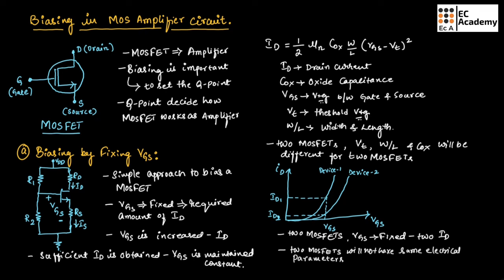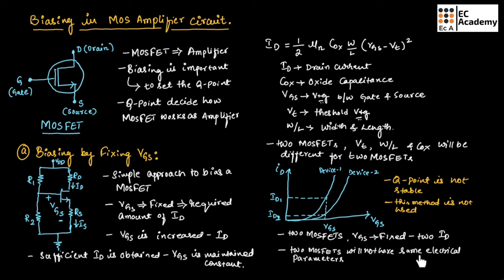In this type of biasing, the Q point is not stable and this method is not commonly used. For two MOSFETs, if VGS is fixed or common, we will get two different drain currents as seen in the graph. That is why we can say two MOSFETs will not have the same electrical parameters, and the Q point will not be stable.